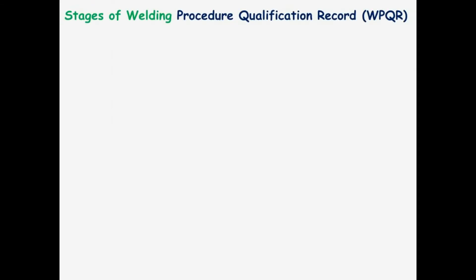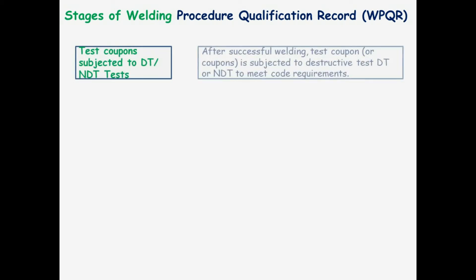Continuing the stages of Welding Procedure Qualification Record, WPQR. The test coupon is subjected to DT or NDT tests. After successful welding, the test coupon or coupons are subjected to destructive testing (DT) or non-destructive testing (NDT) to meet code requirements.